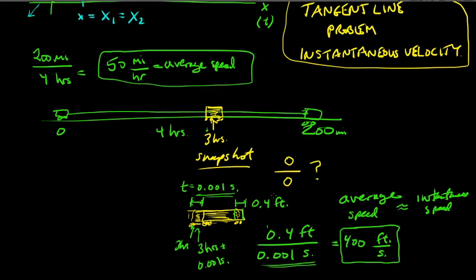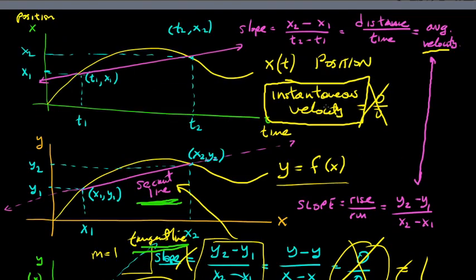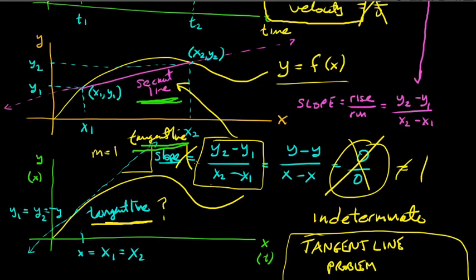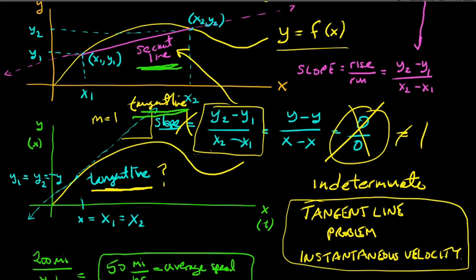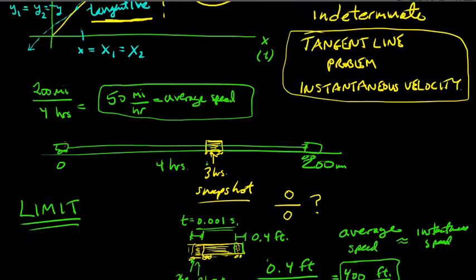This idea of making your time intervals smaller and smaller — which makes your distance smaller and smaller — is the concept of a limit. That's what we're going to be studying in the next series of videos, basically in the first chapter. I'm going to pause here to put everything into perspective. We've been talking about positions and velocities, tangent lines and secant lines. After you read this section and get into chapter two, all this will become much more clear.